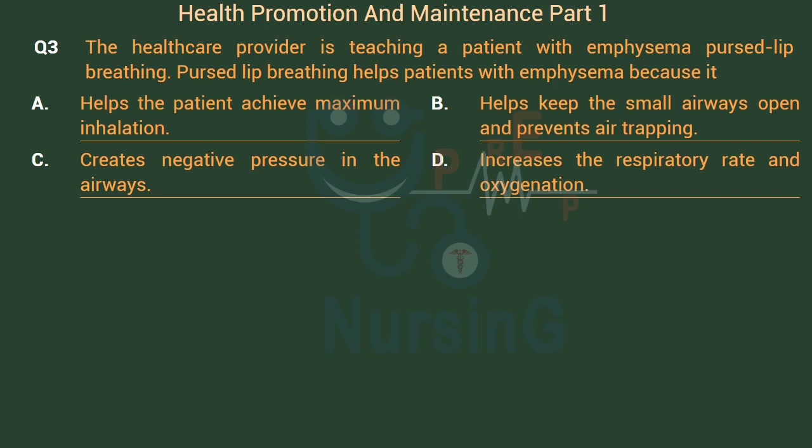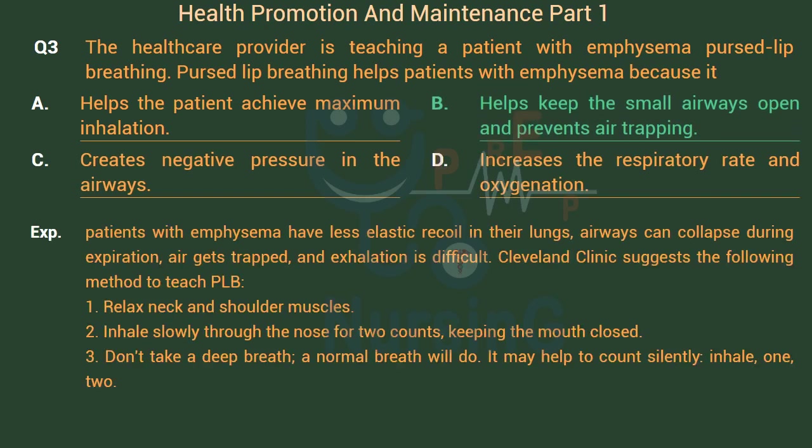The right answer is Option B: Helps keep the small airways open and prevents air trapping. Patients with emphysema have less elastic recoil in their lungs. Airways can collapse during expiration, air gets trapped, and exhalation is difficult.